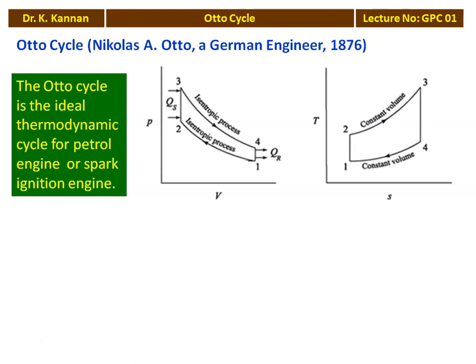The four processes of the Otto cycle: process 1 to 2 is isentropic compression; process 2 to 3 is a constant volume heat addition process; process 3 to 4 is isentropic expansion; and process 4 to 1 is a constant volume heat rejection process.